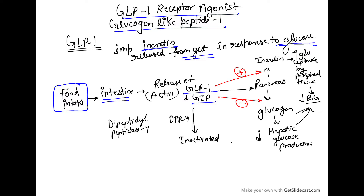GLP-1 and GIP act on the pancreas — they stimulate the release of insulin while they inhibit the release of glucagon. Insulin increases glucose uptake by peripheral tissues, thereby decreasing blood glucose. Glucagon inhibition decreases hepatic glucose production and also decreases blood glucose.